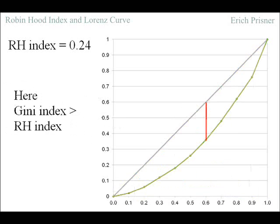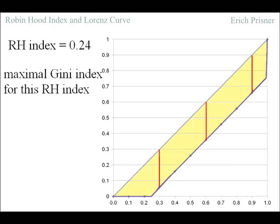For other Lorenz curves the area is larger. It is largest for this example. So we can conclude that the Robin Hood index is always less than or equal to the Gini index.